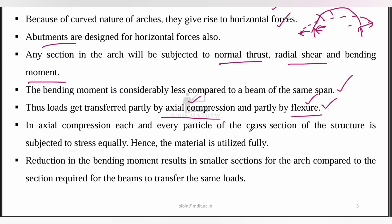In axial compression, each and every particle of the cross-section of the structure is subjected to stress equally. Hence, the material is utilized fully. In the axial compression cross-section, all the particles develop stress and the material is utilized. There is a reduction in bending moment, resulting in a smaller section for the arch compared to the section required for the beam to transfer the same load. Economically, all components are properly utilized in the arch.